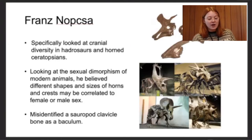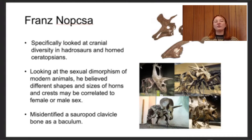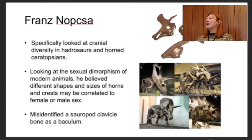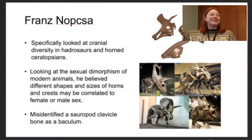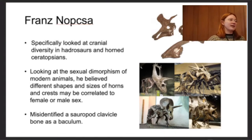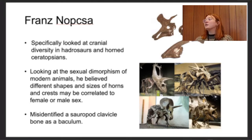Looking at sexual dimorphism in dinosaurs was started by a man called Franz Nopcsa, born in Transylvania in the 1870s — a really pioneering idea for the time, but unfortunately not executed properly. He was specifically looking at cranial diversity in hadrosaurs and ceratopsians to see whether one form could indicate male or female. But they're so different and there are so many of them that we now know are different species, so this seems to be inter-specific rather than sexual variation.